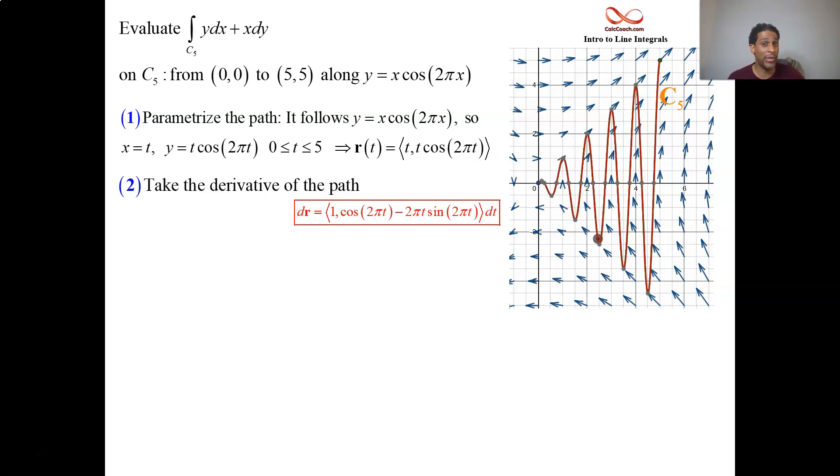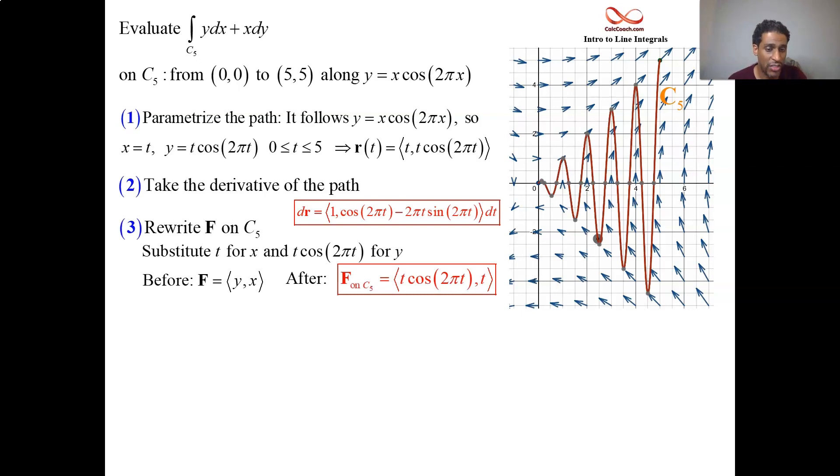What's step three? Your job is to rewrite F on C. Restrict yourself only to look at what's above C. So every place you see a y, rip it out and put in t cosine 2πt. Wherever you see an x, rip it out and put a t. So there's your function restricted to that curve.